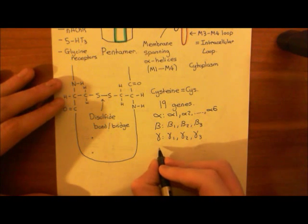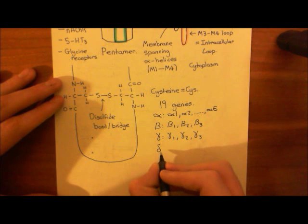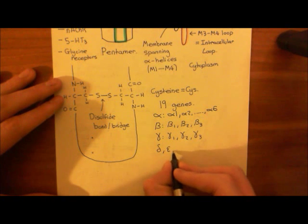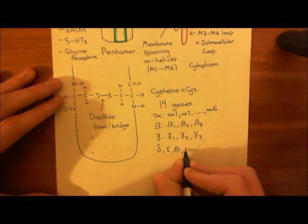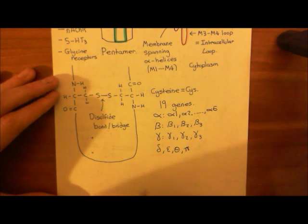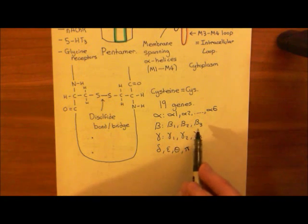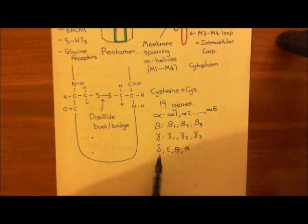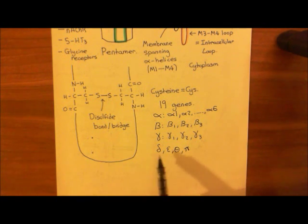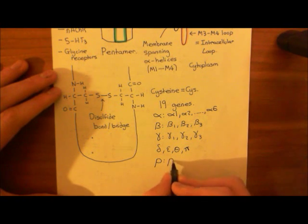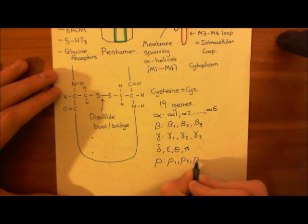There are also genes that stand alone: the delta gene, the epsilon gene, the theta gene, and the pi gene — four more genes. That gives us 6 + 3 + 3 + 4 = 16. The final family is the rho family, which has three genes: rho-1, rho-2, and rho-3. That brings the total to 19 different genes.